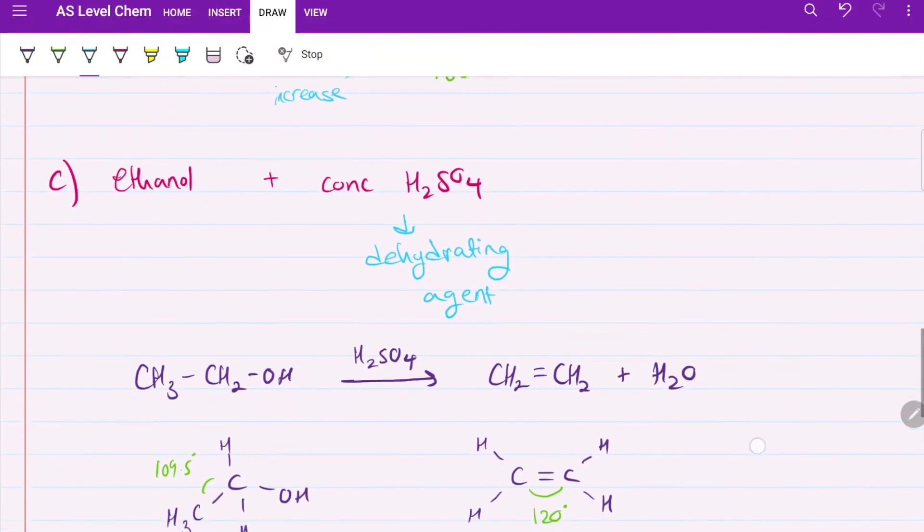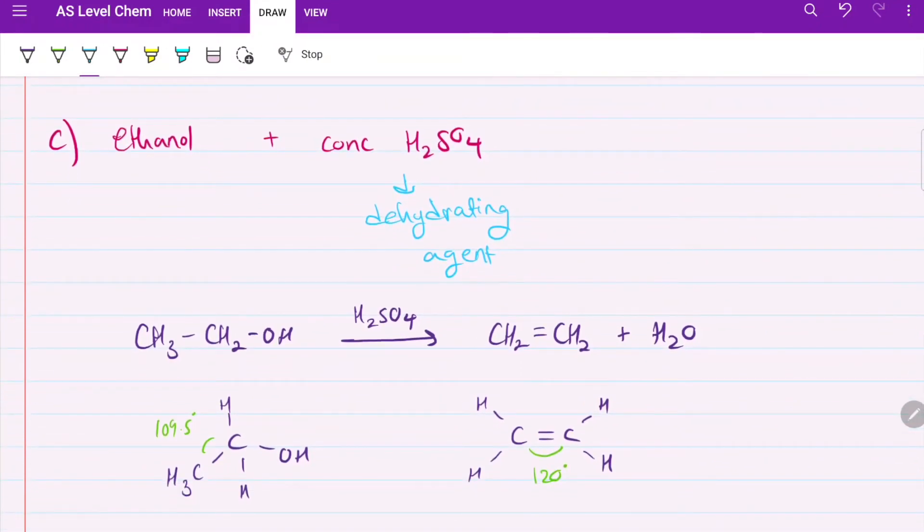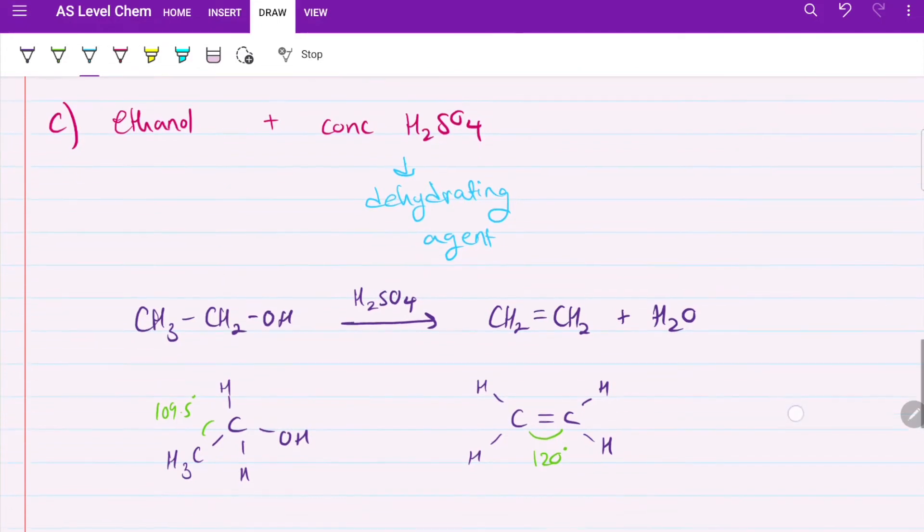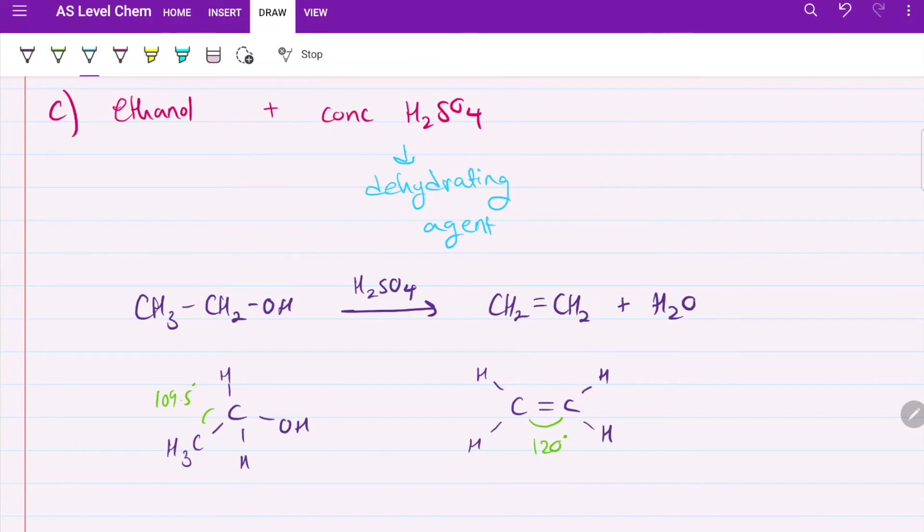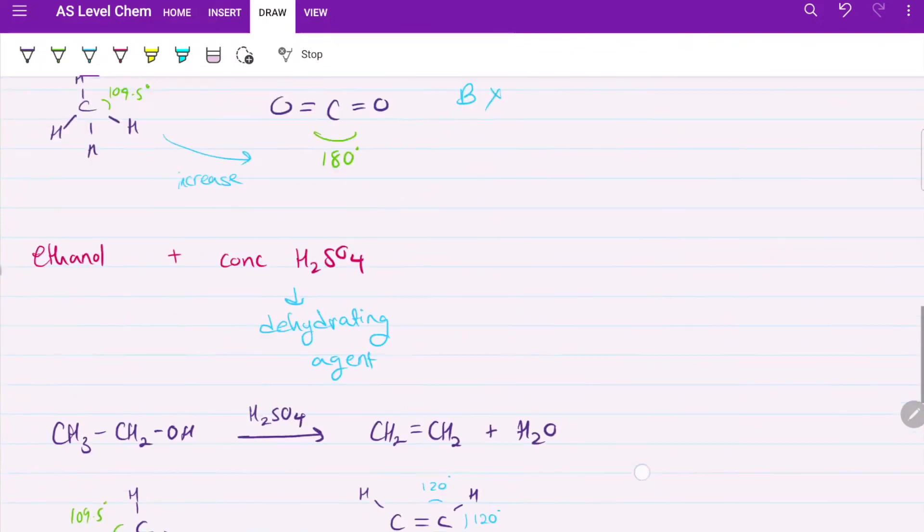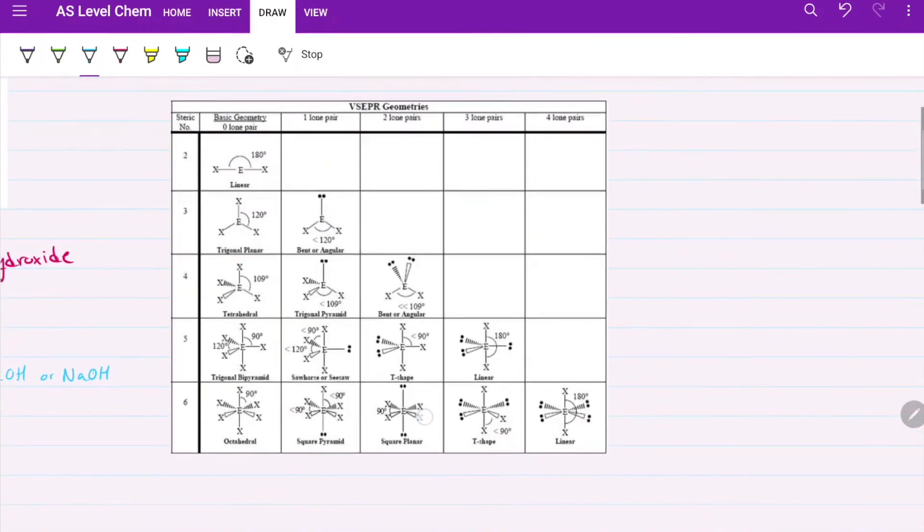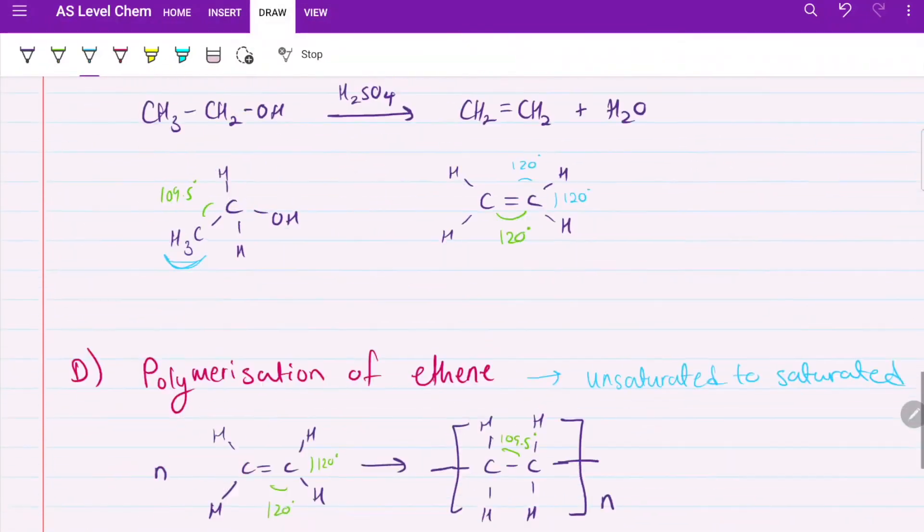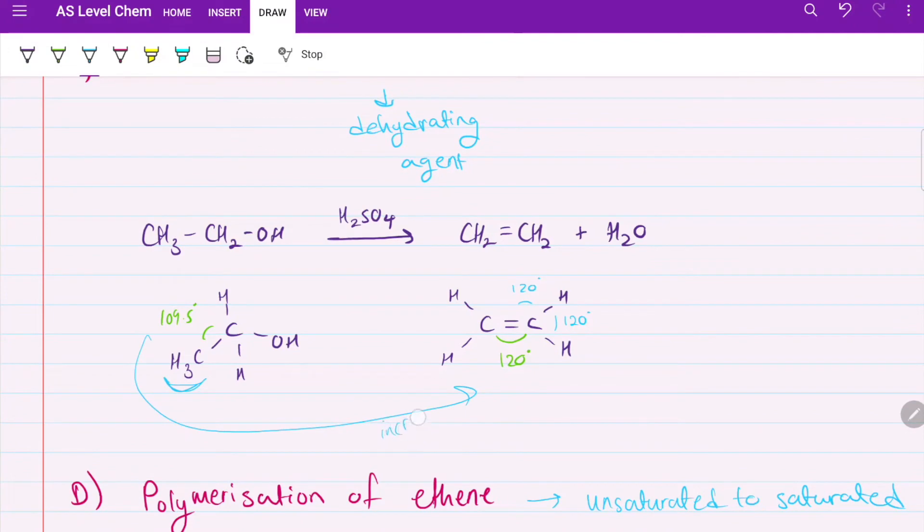We go on to C, ethanol with heated concentrated sulfuric acid. This sulfuric acid will act as a dehydrating agent. It's going to remove water. Dehydration is 'I'm dehydrated, I need water,' so it removes water. We have ethanol, which is a tetrahedral shape with the carbon here. Then here we have ethene, which is an alkene. Alkenes in this form will have 120 degree angle between each bond. This is trigonal planar. That's still an increase, so C is not the option.